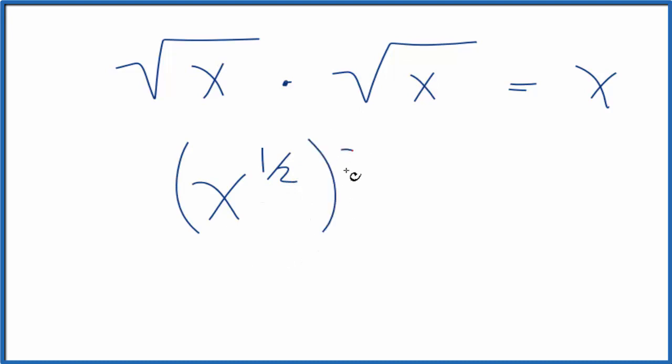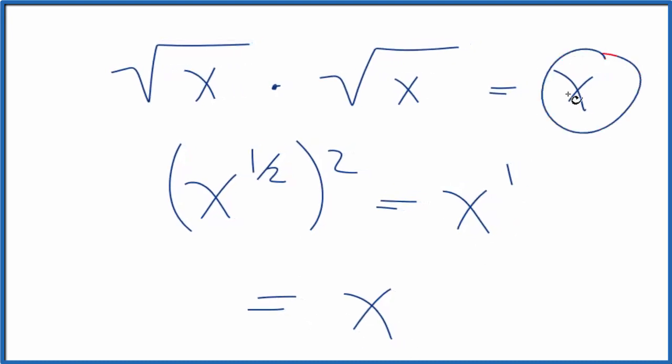So x to the 1/2 times 2. We multiply these together: 1/2 times 2 equals x to the 1 power, which just equals x. That's what we found before, so that makes sense.